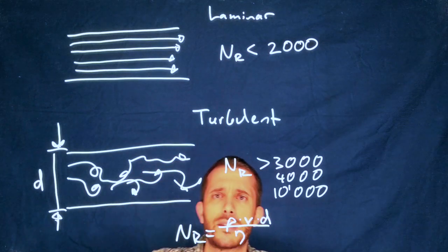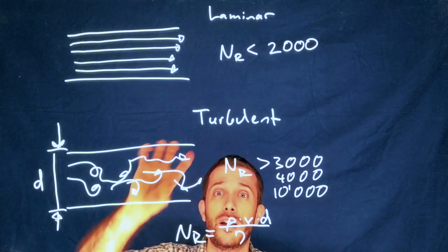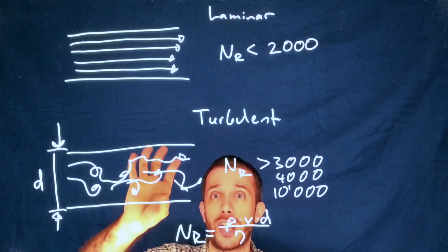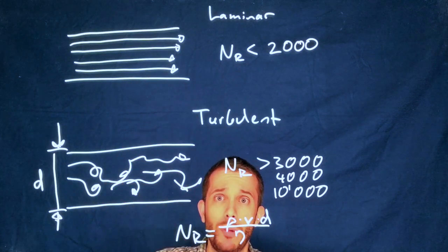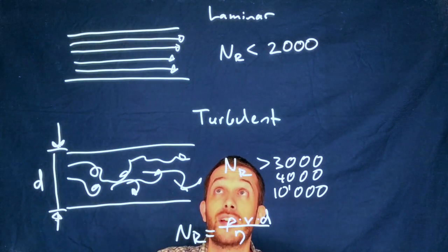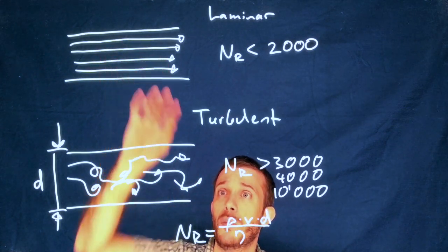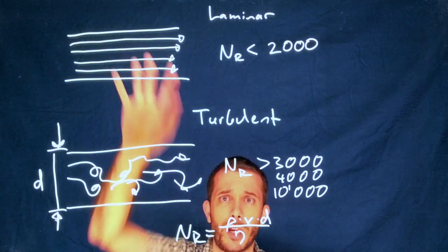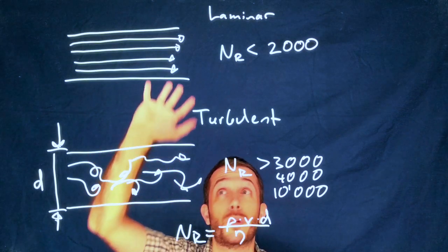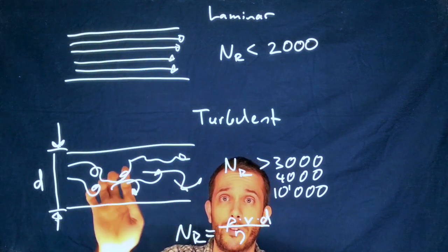If you're in between, so let's say a Reynolds number of 2,500, you will have an unstable flow which can switch from one to the other, which is probably the least thing that you want in any application. You don't want your laminar flow to become turbulent or the other way around. Either one, you would prefer laminar or you would prefer turbulent.